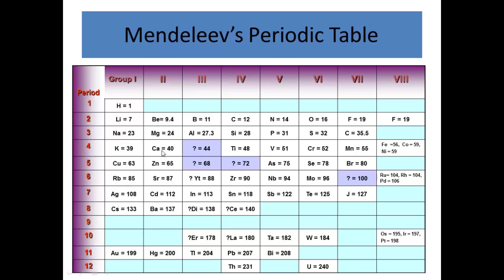And beryllium, magnesium, calcium, strontium, those are the alkaline earth metals. This is not perfect, it's not exactly how it came to be, but there are some similarities.